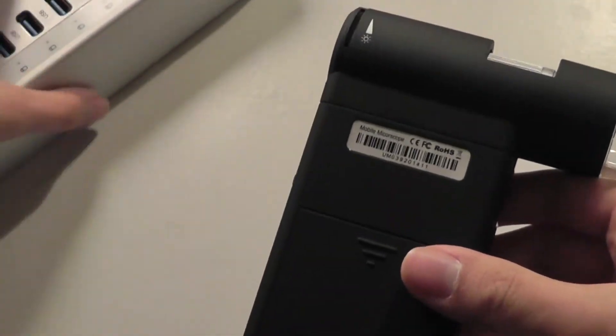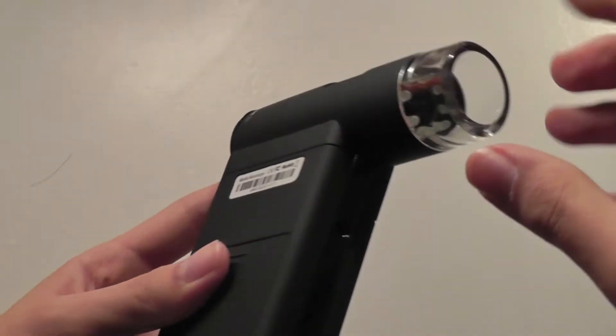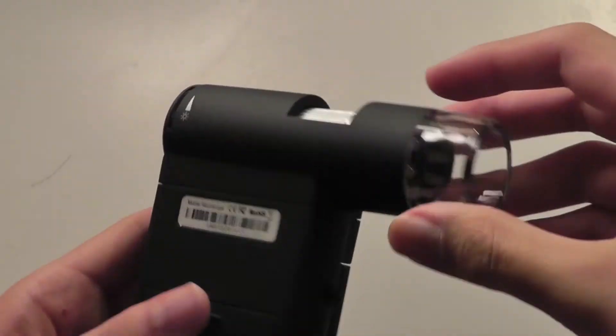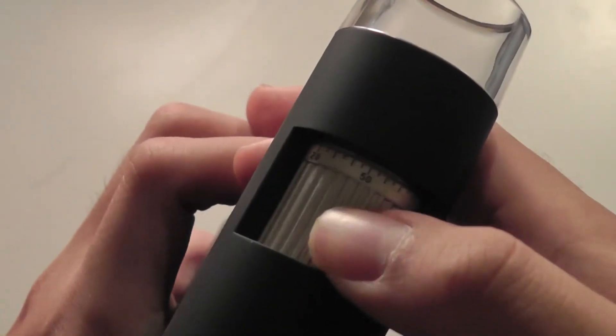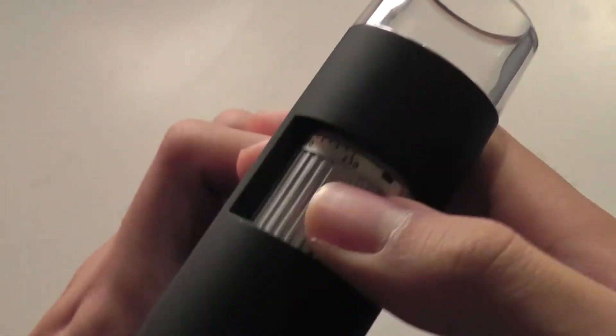One of the downsides of this particular microscope is that there isn't a built-in lens cover. You have to make sure nothing gets inside to make the lens get dirty or attract any dust or grit. But otherwise, it's really easy to use and functions very well.